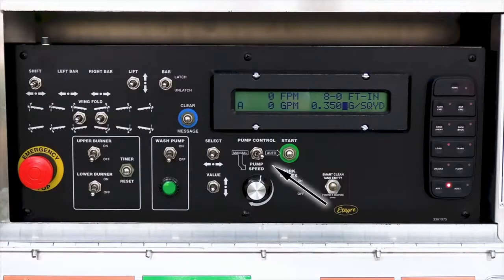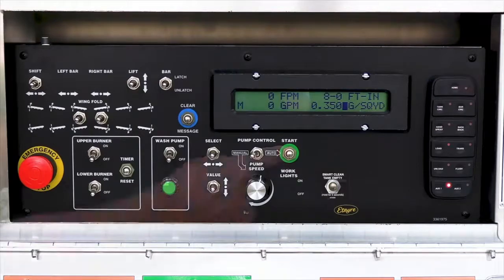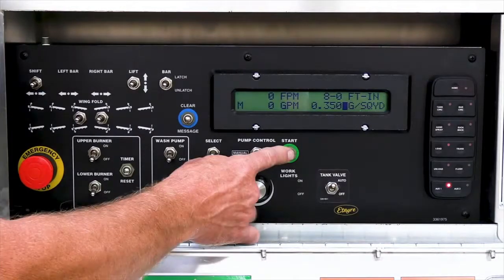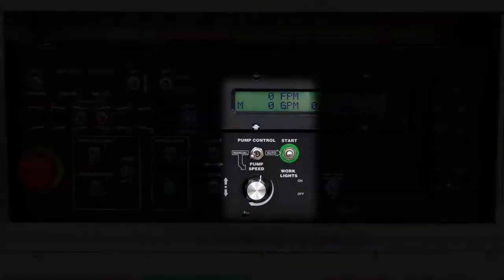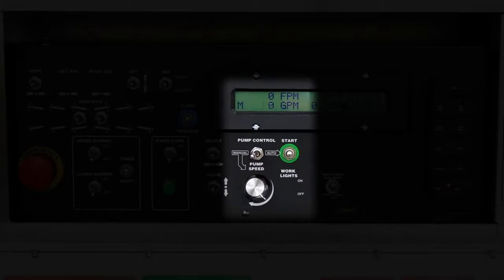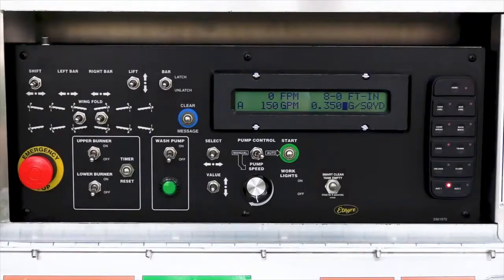Put the pump control to manual and press start. Slowly turn the speed up until the SmartClean tank starts to empty, somewhere near 150 gallons per minute. Turn the pump speed control back to auto to stop the pump. The pump should now have appropriate vacuum to run in auto SmartClean modes.